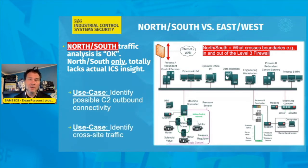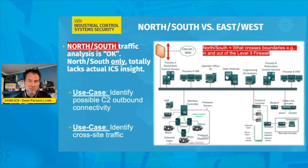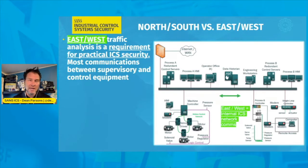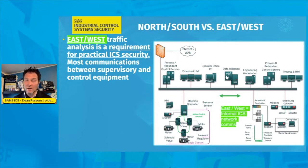There is value in looking at north-south traffic for C2s of adversary malware and remote connections of a live human adversary in the network. Beyond that, there is also identifying cross-site traffic at this north-south collection point at the level three firewall. If you have multiple SCADA sites, collecting data going to and from those sites at this firewall can be helpful. However, there is more benefit in looking at east-west traffic specifically for ICS threat detection, and also from an engineering and network troubleshooting perspective inside the control environment.